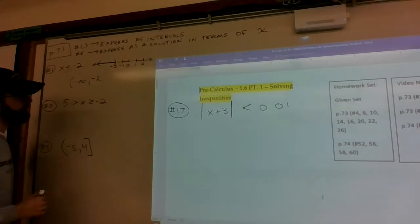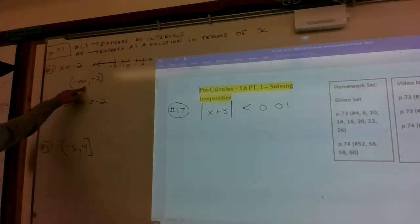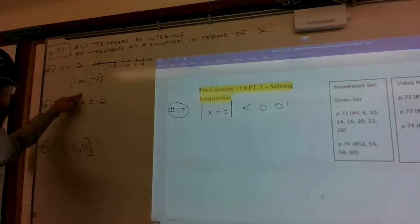But it does stop at negative 2. We're not including it, but we know for sure it stops there. That's what it means to express x is less than negative 2 in interval notation.